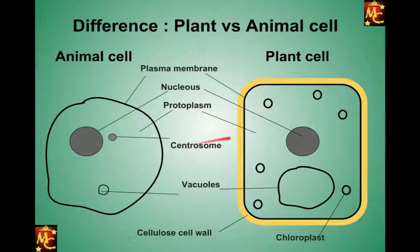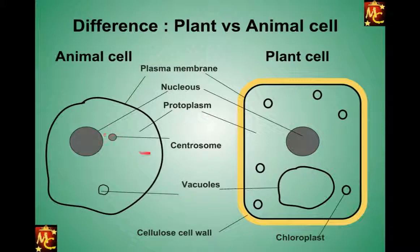Animal cells, however, do have a centrosome. The centrosome is actually involved in spindle fiber formation during mitosis, or cell division. Plant cells don't have this centrosome structure.